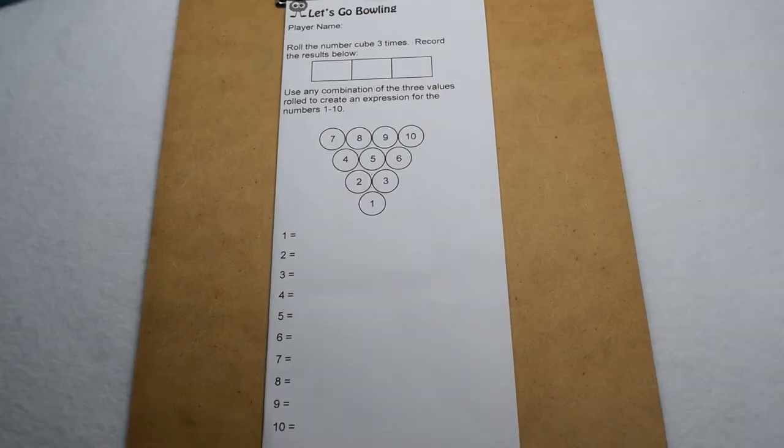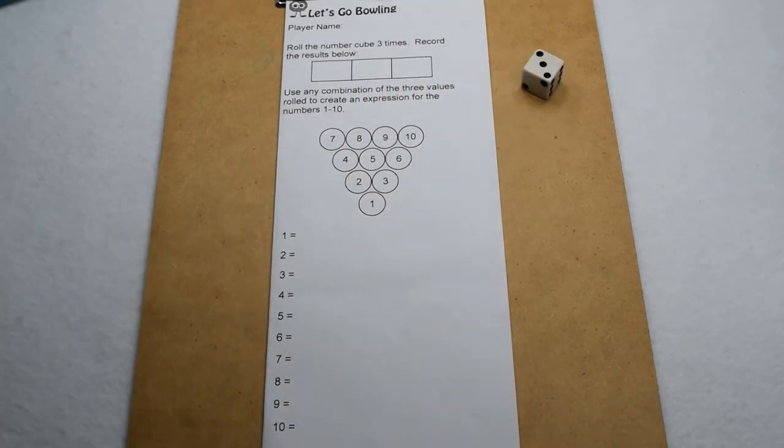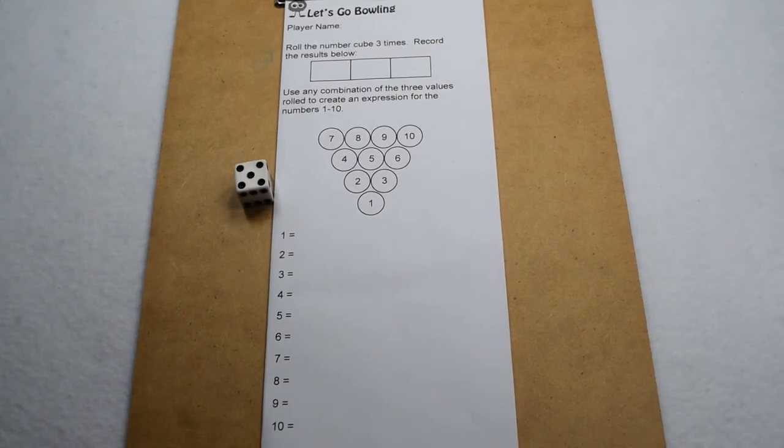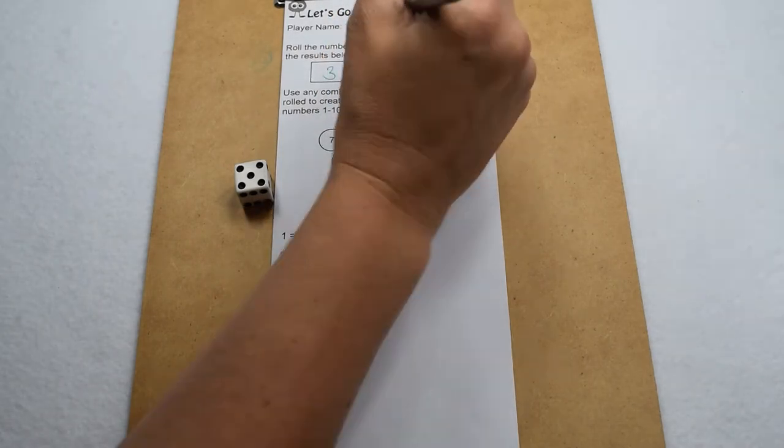Let's start by rolling our dice three times. On our first roll, we got a four. We got a three. And we got a five. So we're going to record those results here in our box. We got a three, a four, and a five.